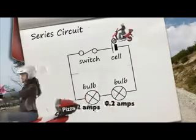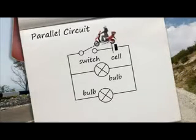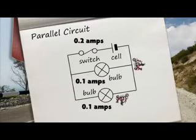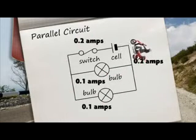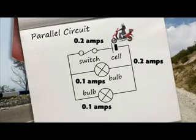Each part of the series circuit has the same current, measured in amps. In a parallel circuit, the current has to divide itself between the different paths. These two bulbs are identical, so in the parallel part of this circuit, the current is split in half, and each bulb gets just 0.1 amps.